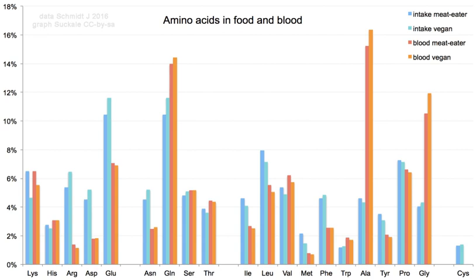Many non-standard amino acids have a specific code. For example, several peptide drugs such as bortezomib and MG132 are artificially synthesized and retain their protecting groups, which have specific codes. Bortezomib is Pyz-Phe-boroLeu, and MG132 is Z-Leu-Leu-Leu-al. To aid in the analysis of protein structure, photoreactive amino acid analogues are available, including photoleucine and photomethionine.